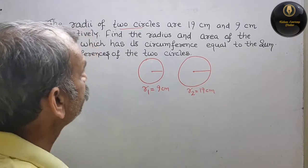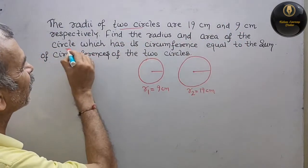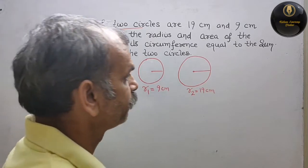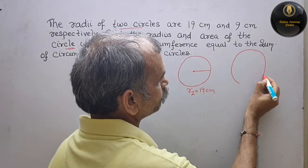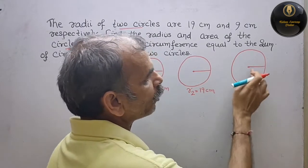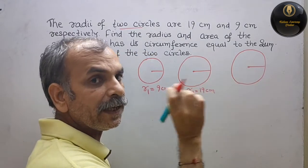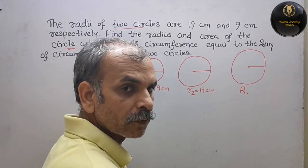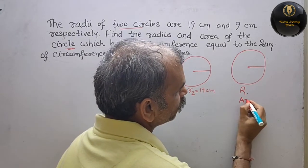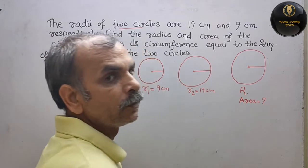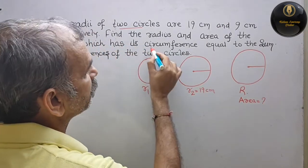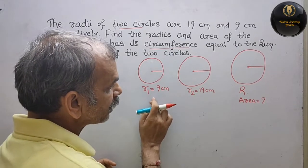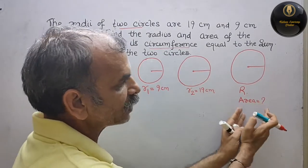Ab dekho ismein kya bola hai: find the radius and area of the circle. So these are the two circles, aur ek doosra circle bhi hamare paas hai — support this is that circle. We have to find out the area and radius. Iska radius humne le liya capital R. Aur dekho isne kya diya hai: circumference is equal to the sum of the circumferences of the two circles. That means dono ka circumference add karenge, you will get the circumference of this third circle.